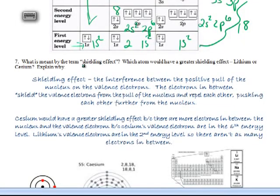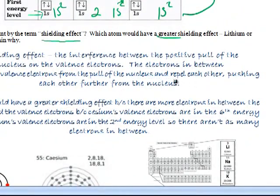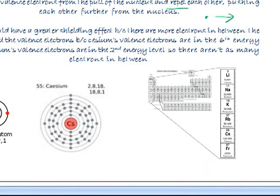Now let's talk about trends here. This is what's meant by the term shielding effect. And then you have to actually put into practice which atom would have a greater shielding effect, lithium or cesium. Now the shielding effect itself is kind of the interference or the electrons in the way between the outermost valence electrons and the nucleus. So the nucleus doesn't do as great of a job pulling on those valence electrons if there's a lot of electrons in the way. Plus, electrons are negative. They don't like each other. So they're repelling each other. So they're pushing each other away from the nucleus.